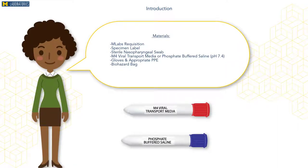The materials needed for specimen collection are an MLabs requisition, specimen label, sterile nasopharyngeal swab, M4 viral transport media or phosphate-buffered saline with a pH of 7.4, gloves, appropriate PPE, and a biohazard bag.